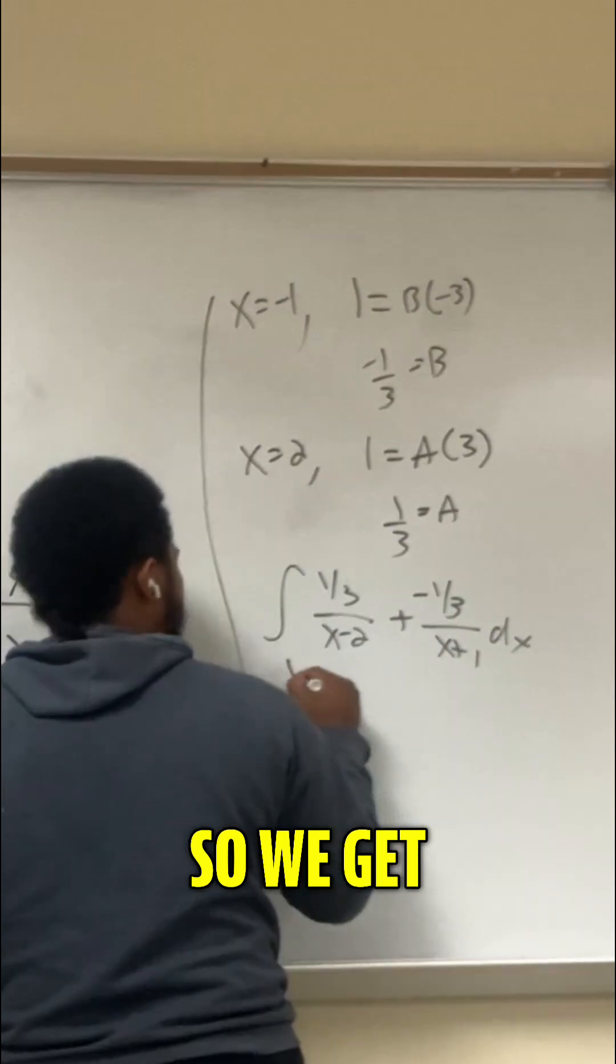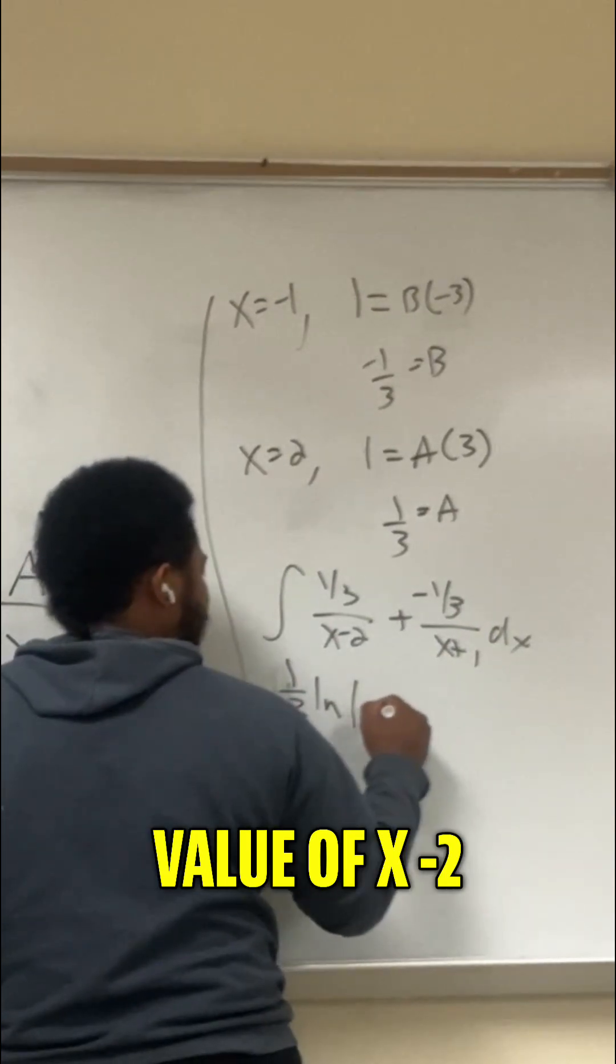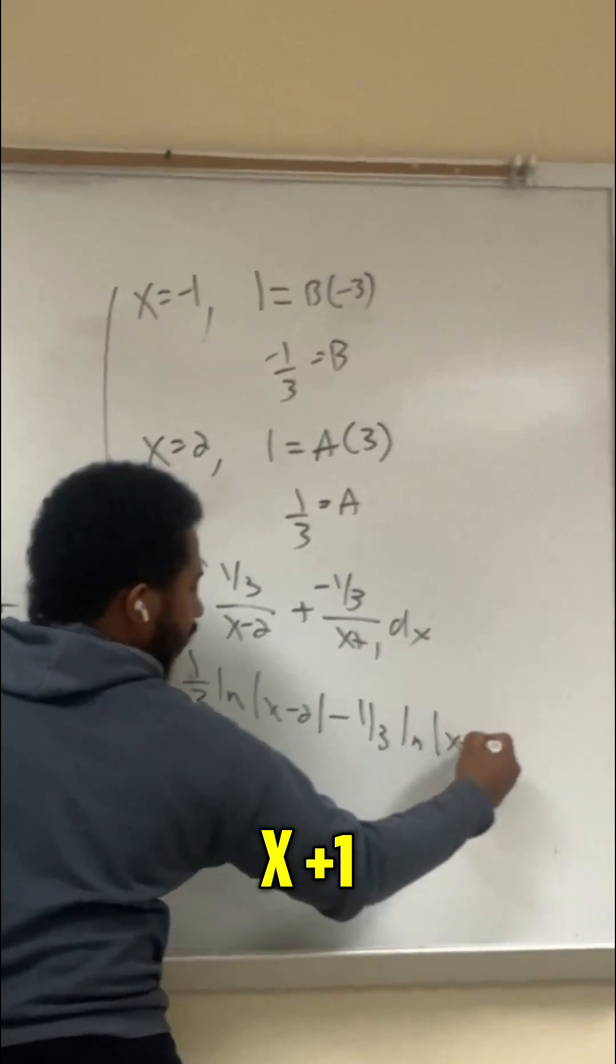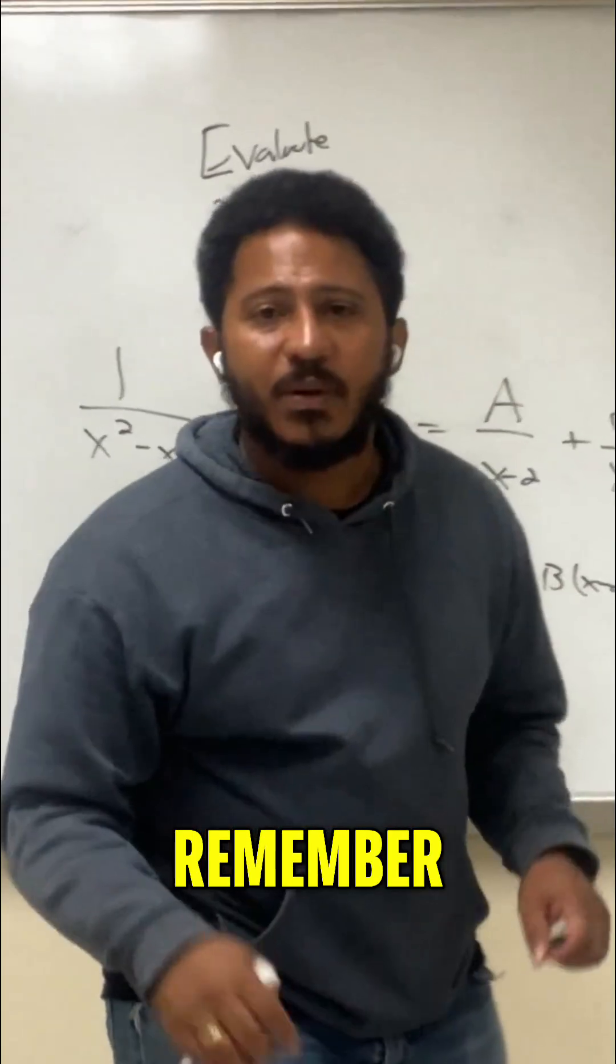And now we know that's just ln. So we get 1 third the ln of absolute value of x minus 2 minus 1 third the ln of absolute value of x plus 1. Don't forget the plus c. Always remember, it's everywhere.